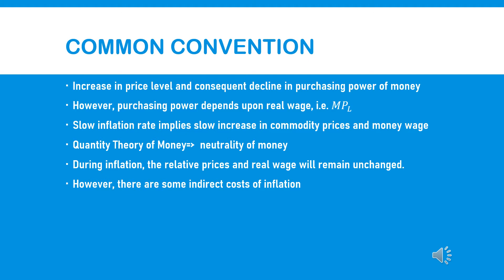This is also supported by the quantity theory of money, especially the Cambridge version, which explains the neutrality of money. Whenever there is an increase in money supply, that will affect only the nominal variables, keeping the real variables unchanged. Nominal variables include the absolute price of a commodity, money wage, and nominal rate of interest — these will increase. Whereas the real wage, real rate of interest, employment, output, and marginal productivity, which are determined by supply-side factors, will remain unchanged.